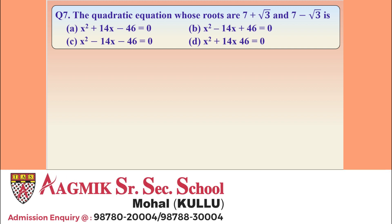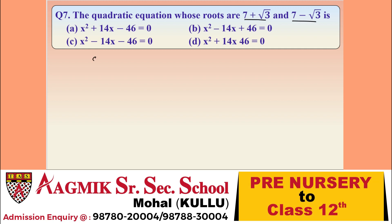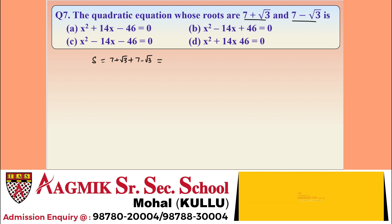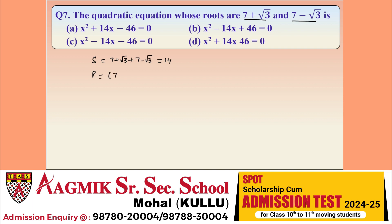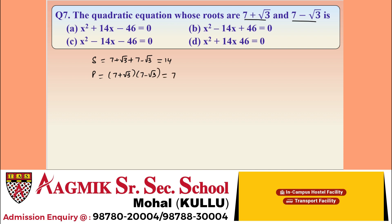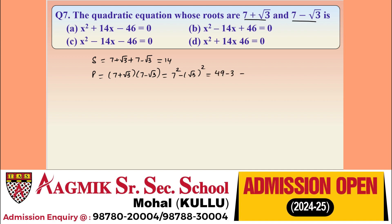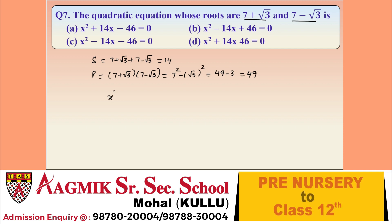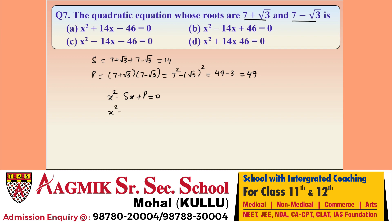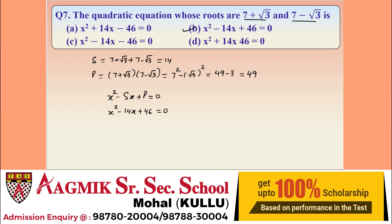Question 7: find the quadratic equation whose roots are (7 + √3) and (7 - √3). Sum of roots = (7 + √3) + (7 - √3) = 14. Product of roots = (7 + √3)(7 - √3) = 7² - (√3)² = 49 - 3 = 46. The equation is X² - (sum)X + product = 0, giving X² - 14X + 46 = 0. Option B is correct.